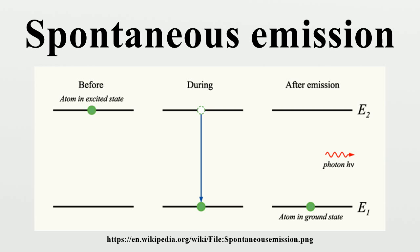Spontaneous emission in free space depends upon vacuum fluctuations to get started. Although there is only one electronic transition from the excited state to ground state, there are many ways in which the electromagnetic field may go from the ground state to a one-photon state. The electromagnetic field has infinitely more degrees of freedom, corresponding to the different directions in which the photon can be emitted. This infinite degrees of freedom for the emission of the photon results in the apparent irreversible decay, i.e., spontaneous emission.